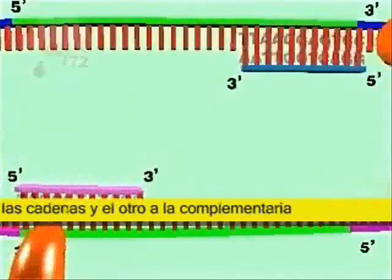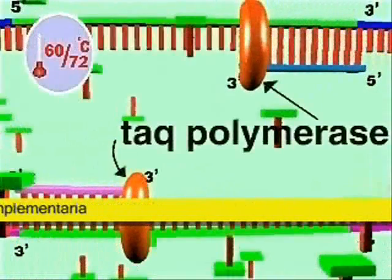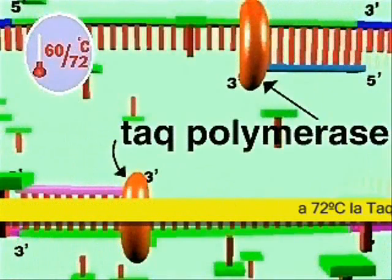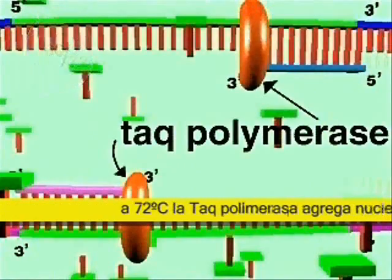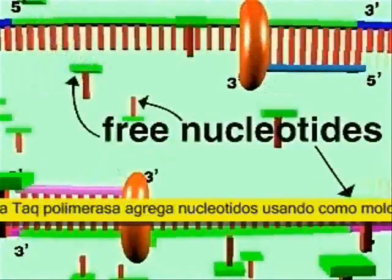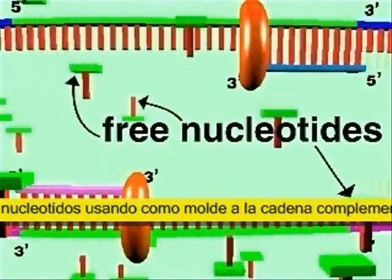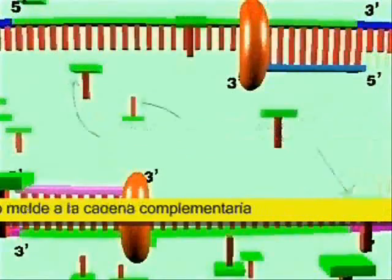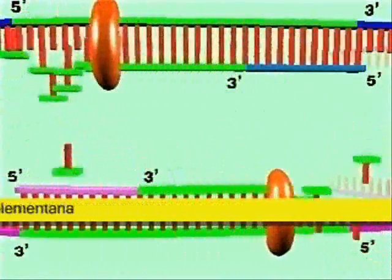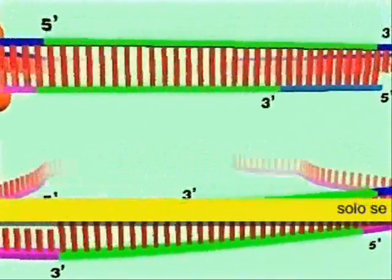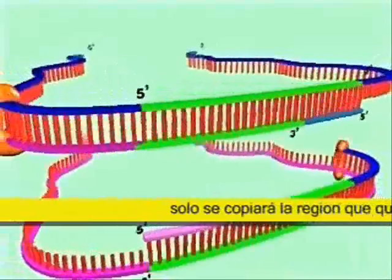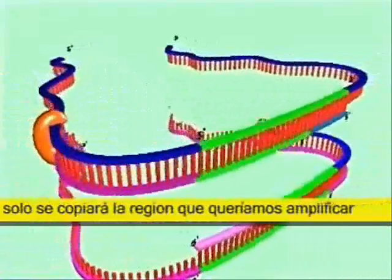The primers then direct a DNA polymerase called TAC to synthesize the complementary DNA strands from free nucleotides. In the entire mixture of genomic DNA molecules, only DNA containing the target sequence is copied because the TAC polymerase can only copy molecules that have a primer attached.